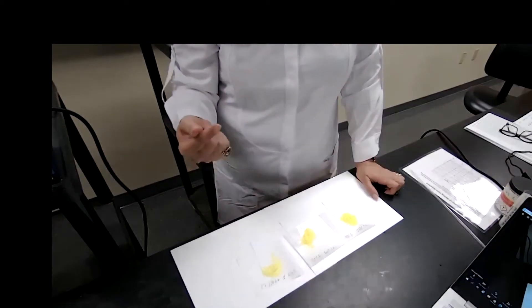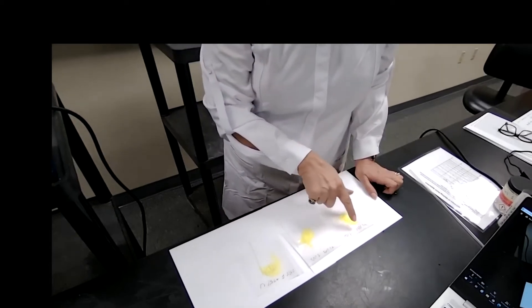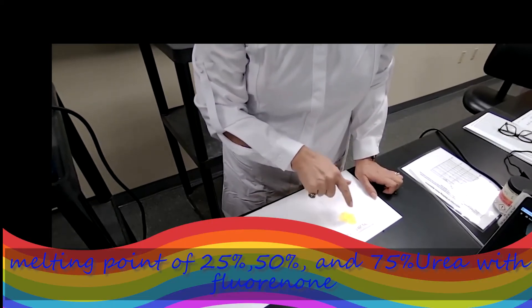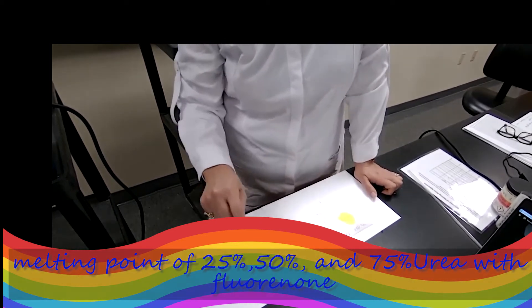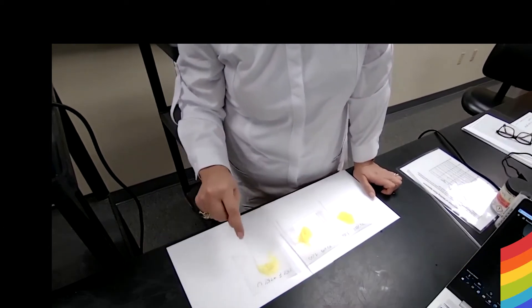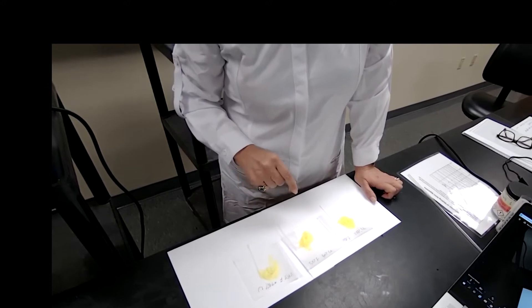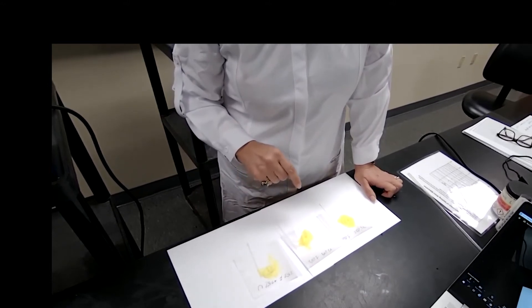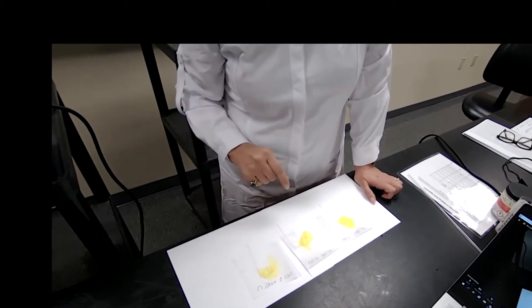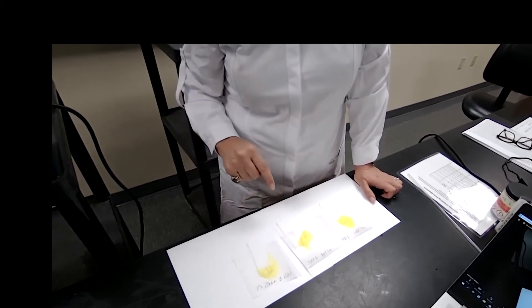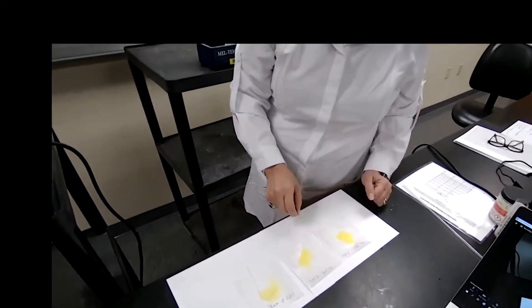The three samples that we have are 75% urea with 25% fluoranone, 50% fluoranone with 50% urea, and 25% fluoranone with 75% of the urea. So we are going to look at the difference in the melting point and I have the samples prepared. Let's move on.